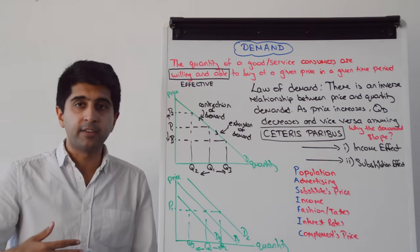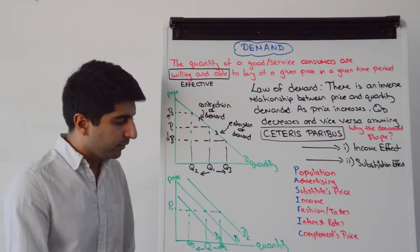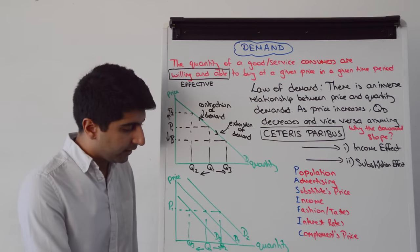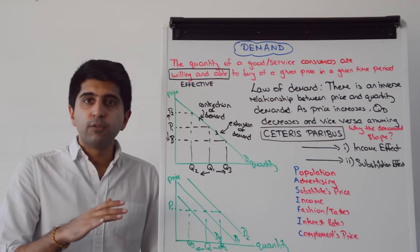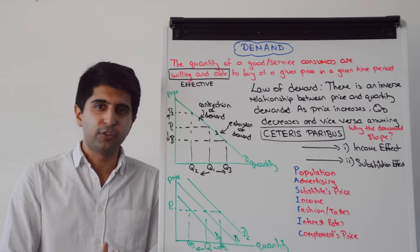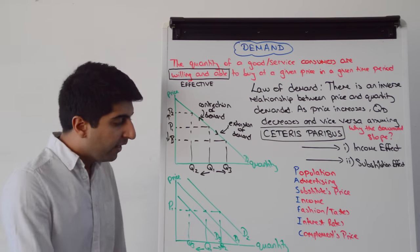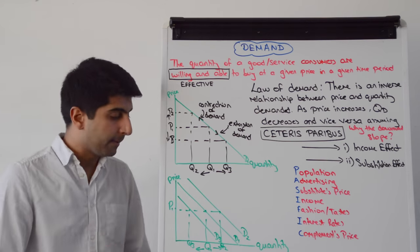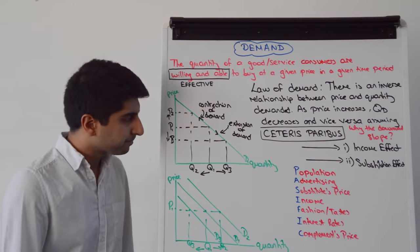Advertising also affects our willingness to buy something. Good advertising will shift the demand curve from D1 to D2, increasing demand from Q1 to Q2 regardless of price. Whereas bad advertising — maybe a bad report or a bad news article — will make us less willing to buy, shifting the demand curve left from D1 to D3.